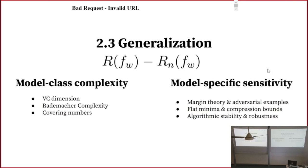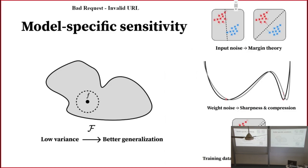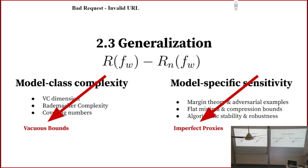Unfortunately both approaches have limitations. The first suffers from obtaining vacuous bounds for sufficiently large model classes. The second suffers from the fact that these measures are imperfect proxies for generalization. In particular, minimum sharpness doesn't have great empirical support for transformers and state-of-the-art language models — sometimes there's a negative correlation between minimum sharpness and out-of-distribution performance. So we need something else. I propose we walk the fine line between them: this intermediate regime of model subclasses, doing thermodynamics and statistical physics.